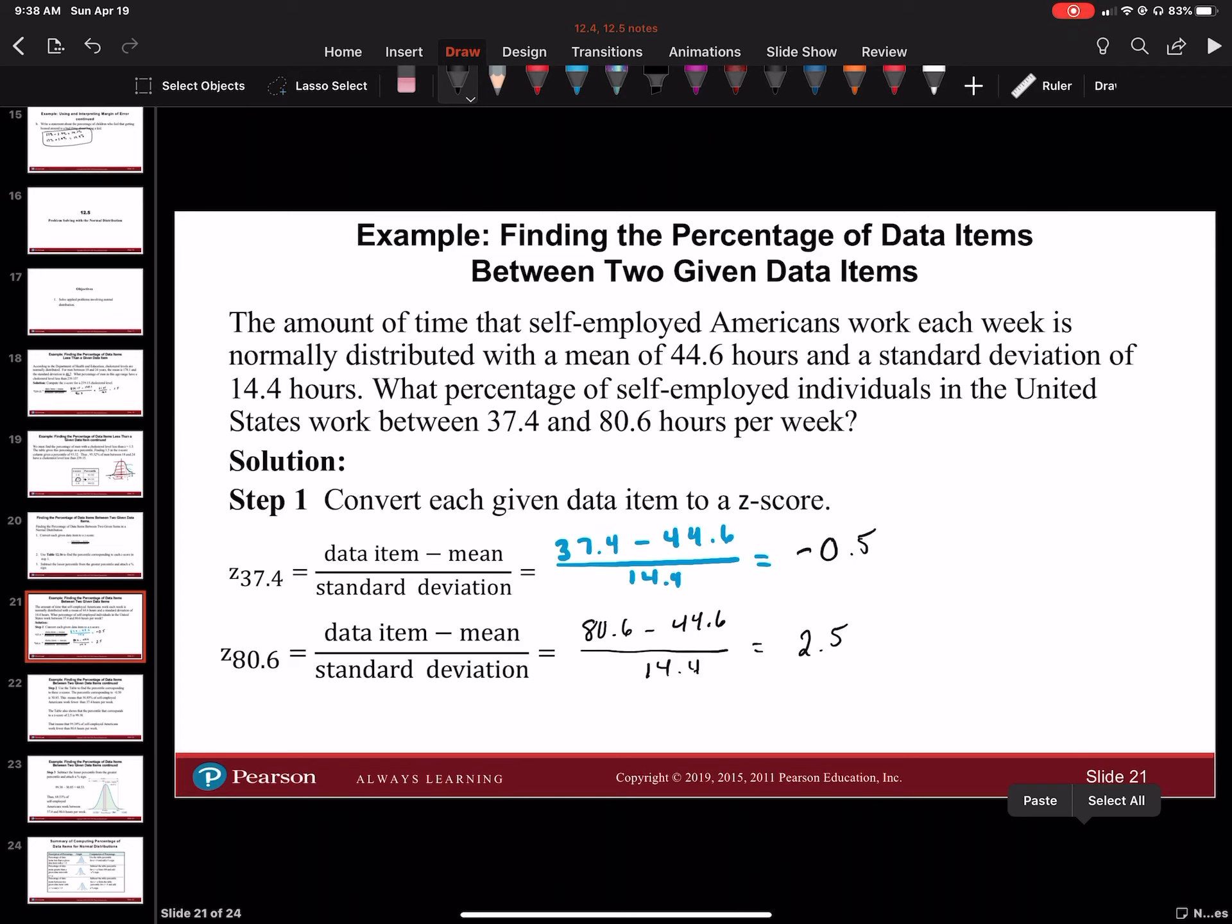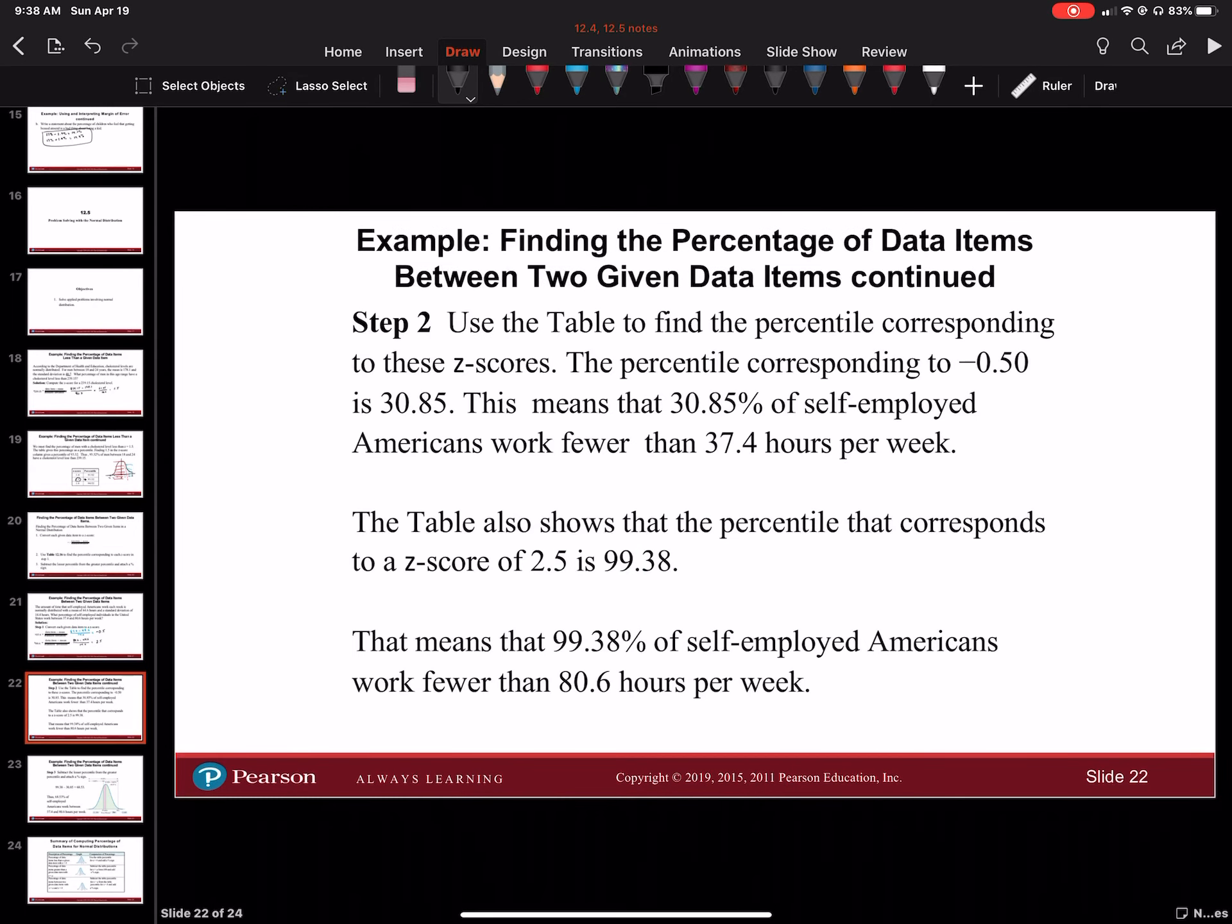That's our first step. Now use the table to find the percentile that corresponds with these z-scores. The percentile corresponding with negative 0.5 is 30.85. This means that 30.85% of self-employed Americans work fewer than 37.4 hours per week.